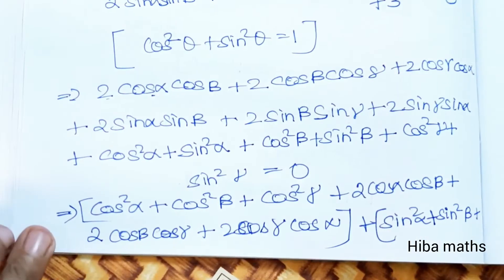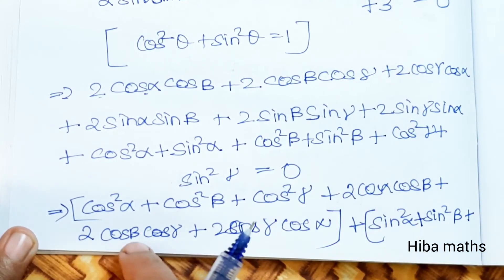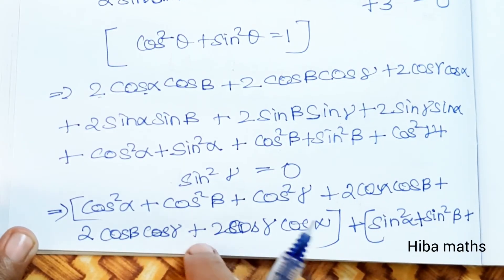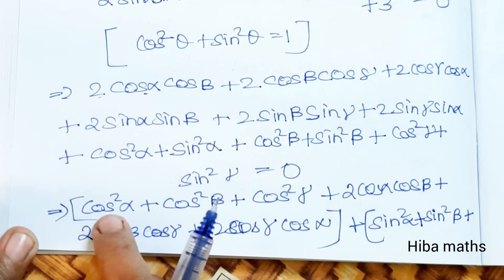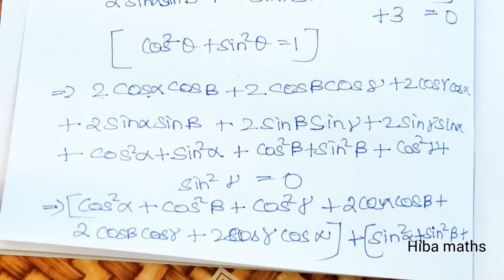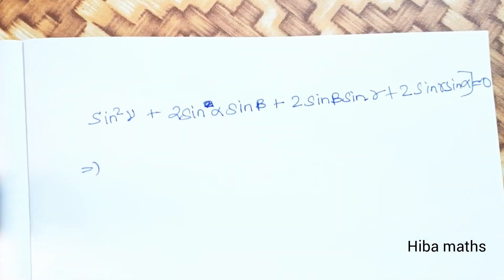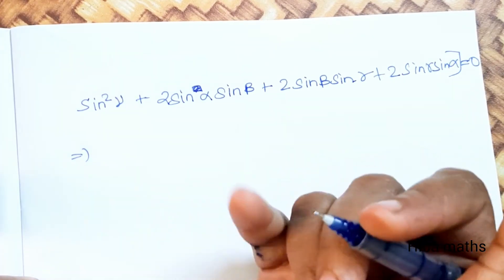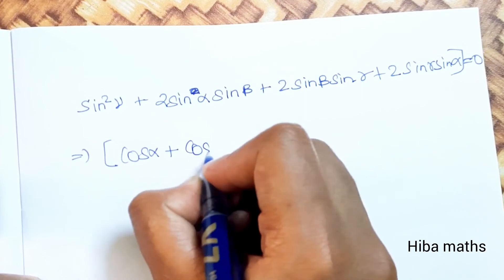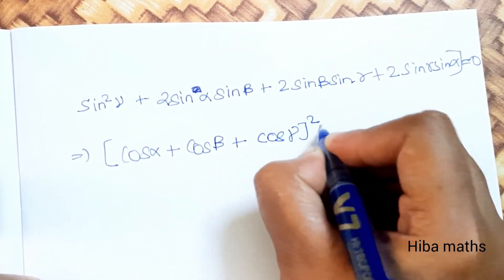This matches the format: a² + b² + c² + 2ab + 2bc + 2ca = (a + b + c)². So we write: (cos α + cos β + cos γ)² + (sin α + sin β + sin γ)² equals 0.